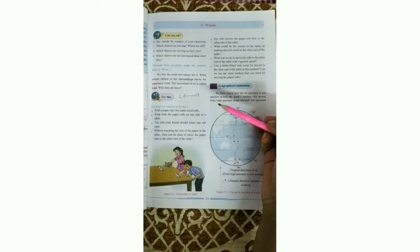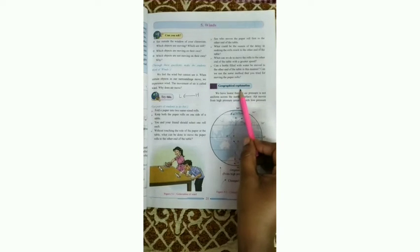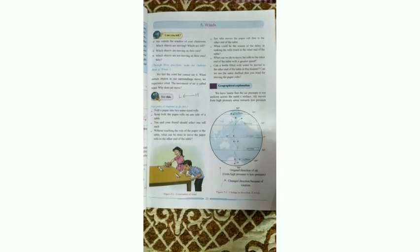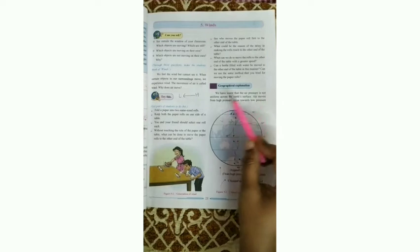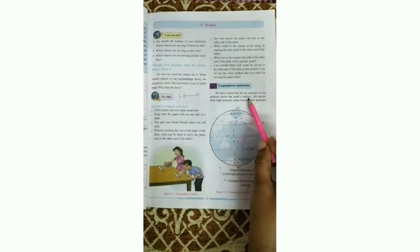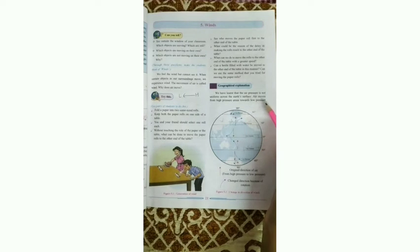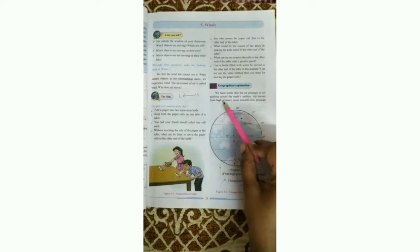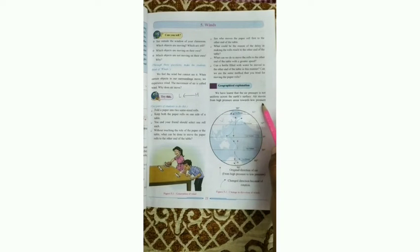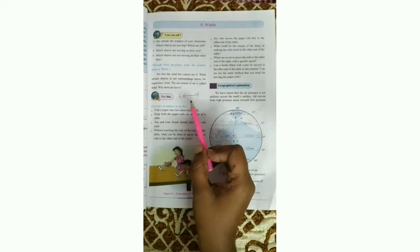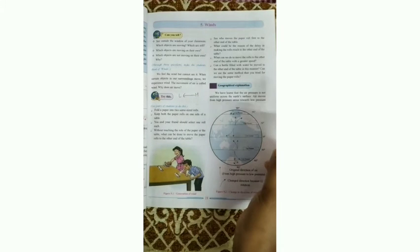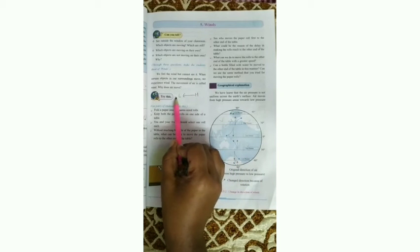Now for some geographical explanation. We have learned that air pressure is not uniform across the Earth's surface. Everywhere on Earth the air pressure is not the same — some places have low pressure and some have high pressure. Air moves from high pressure areas towards low pressure areas.